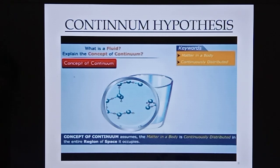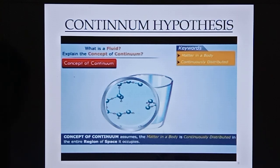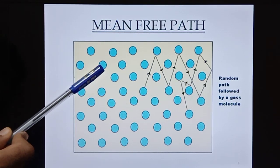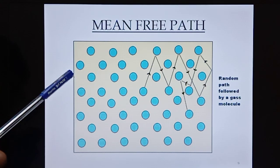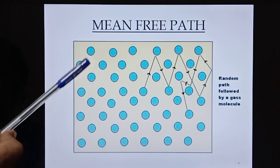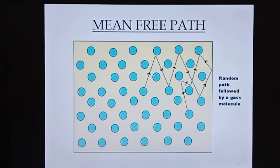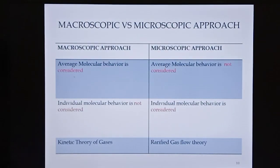Next comes the continuum hypothesis. The continuum hypothesis says that molecules are continuously distributed with no voids present — that is, no empty spaces. The continuum hypothesis is valid based on one assumption: the mean free path of the molecule must be much less than the system dimension. The mean free path is the distance traveled by a molecule between two consecutive collisions. If the mean free path is much less than the overall system dimension, the continuum hypothesis is valid.